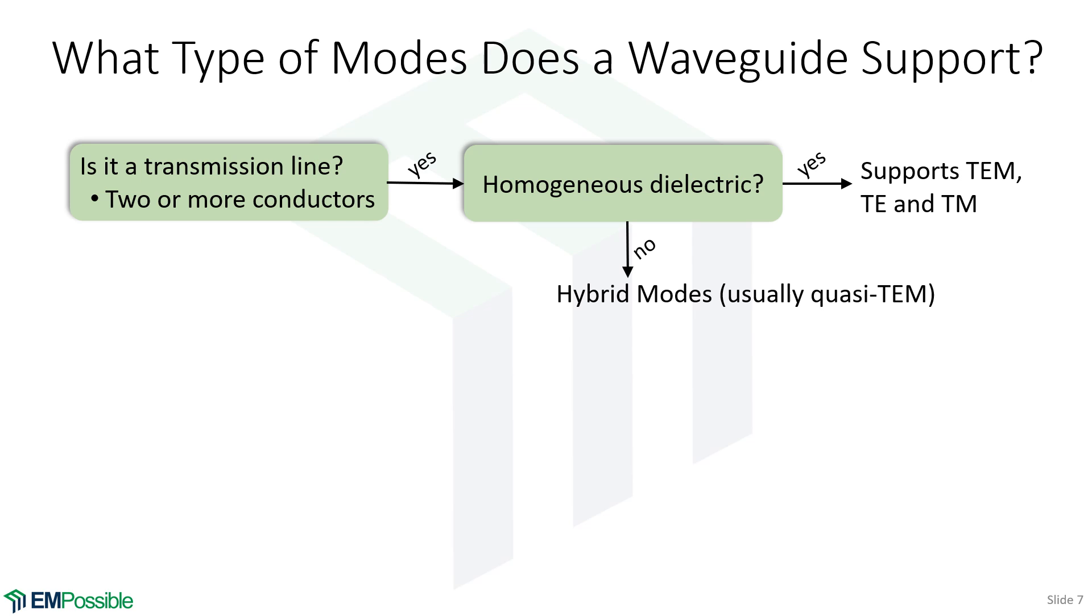If it does not have a homogeneous fill, then it supports hybrid modes. And very often, it's sometimes a good approximation, maybe even almost always a good approximation, if we're solving this numerically or analytically to assume that they're TEM, solve it as if it's TEM, and we get answers that resemble very closely if we didn't make that approximation, but did a lot more work to get the answer. So those are called quasi-TEM.